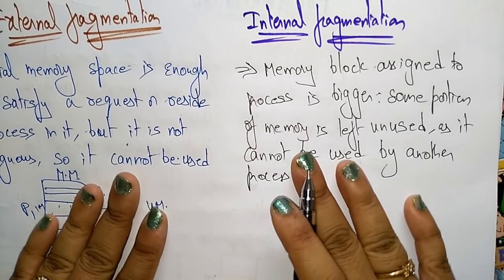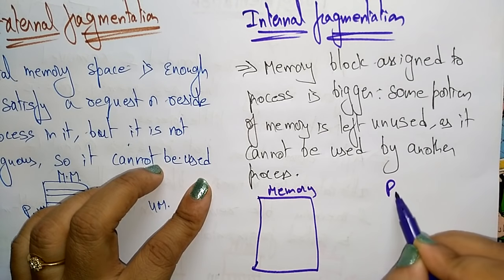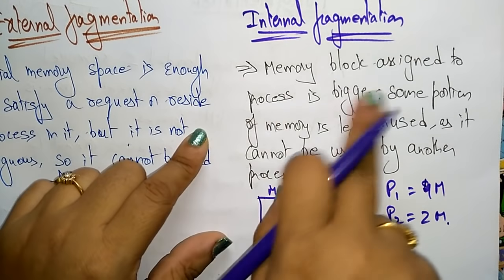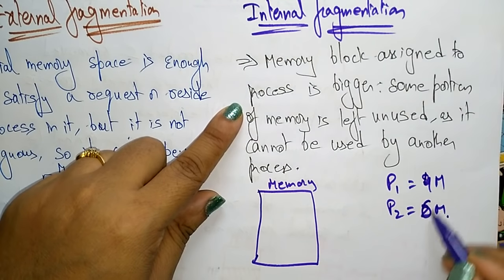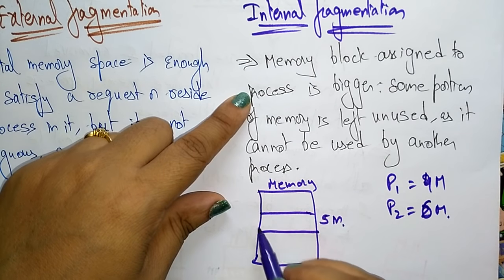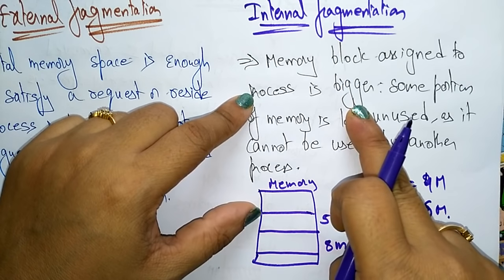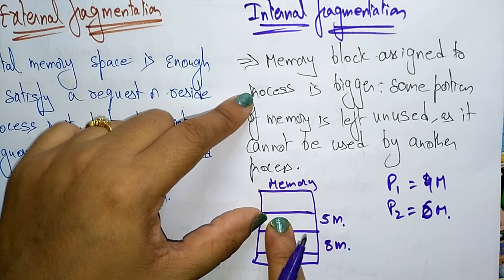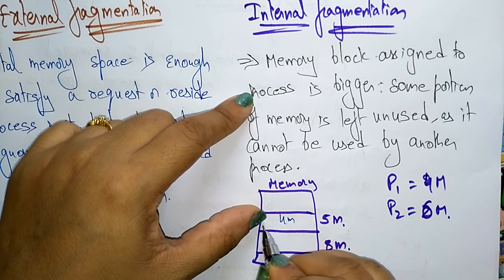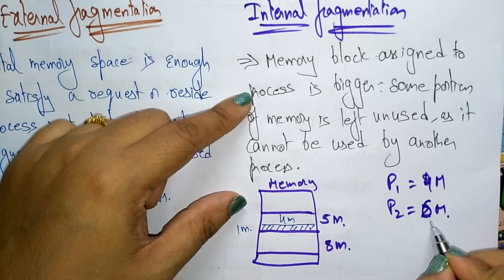Fragmentation can cause waste of memory, and compaction technique can be used to create more free space out of fragmented memory. In internal fragmentation, a memory block assigned to a process is bigger. For example, process P1 is 4 MB and process P2 is 2 MB. Suppose a memory block is 6 MB — a memory block assigned to a process is bigger. So if 5 MB is allotted to P1 which is 4 MB, and 8 MB is allotted to P2 which is 2 MB, the assigned partition is bigger.